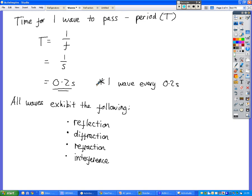All waves, whether it's light waves or electromagnetic waves or sound waves, they all exhibit the same properties. One of those is reflection. Waves will reflect off things.